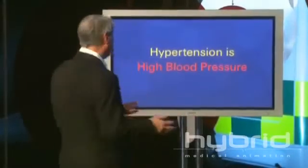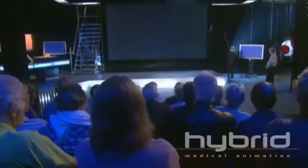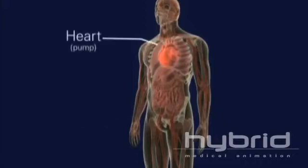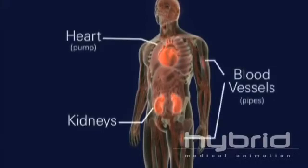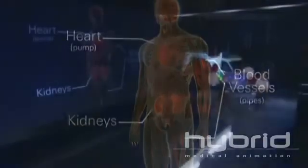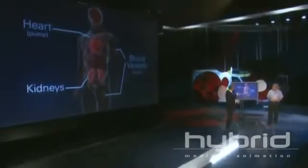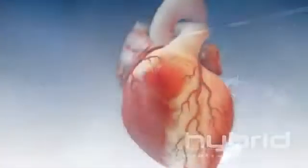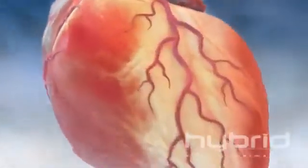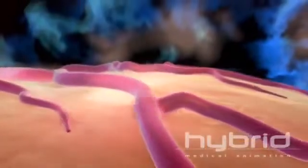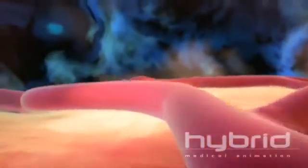Before we talk about hypertension, we need to look at the normal circulation and normal blood pressure. The circulation consists of a pump — the heart — which pumps blood through a series of pipes, the arteries, delivering oxygen and nutrients to the tissues, such as the kidneys and the brain. A second series of pipes, the veins, takes blood back to the heart and the lungs, completing the circulation.